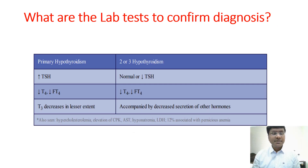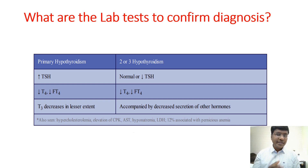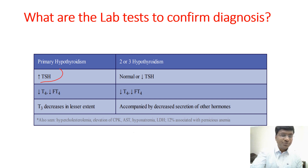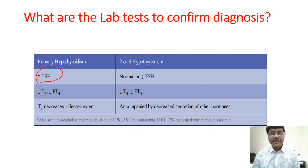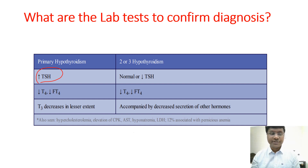What are the laboratory results to confirm the diagnosis of hypothyroidism? In primary hypothyroidism, T3 and T4 are reduced but TSH is elevated. In secondary and tertiary hypothyroidism, everything is reduced — TRH is decreased, TSH is decreased, and T3 and T4 are also reduced.